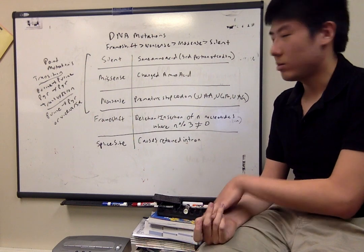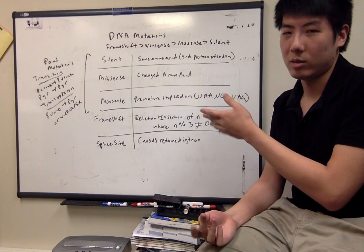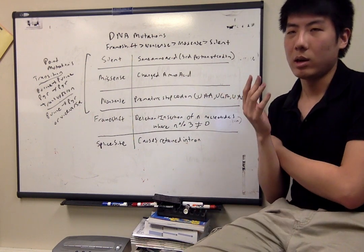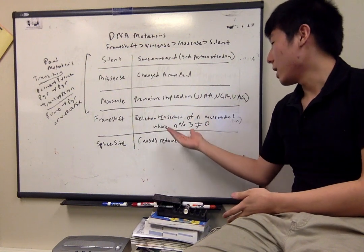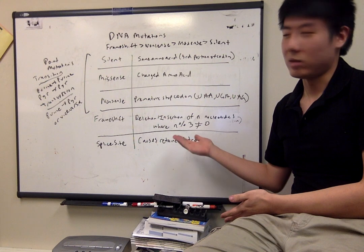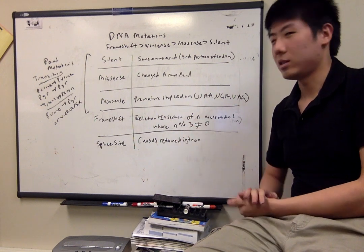A frameshift mutation is different from a point mutation in that you're adding or subtracting a number of nucleotides n, where n is not divisible by 3, so n modulo 3 is not equal to 0.